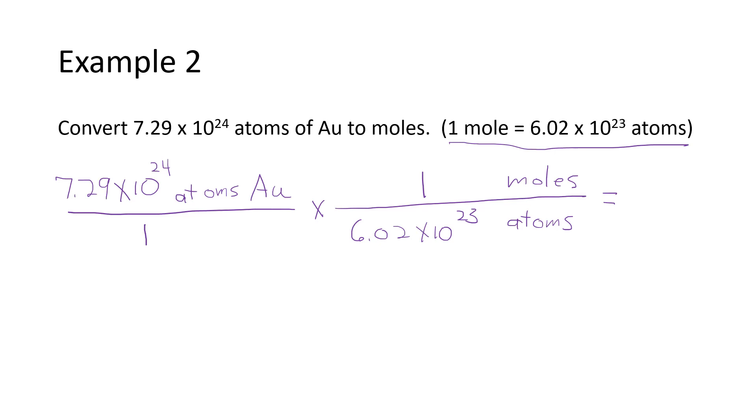So now I need to run this in my calculator. I can ignore the ones. I don't have to type them in. But in the top, I have 7.29 EE 24. And then divided by 6.02 EE 23 equals. And my calculator is telling me that the final answer on this is 12.1 moles.